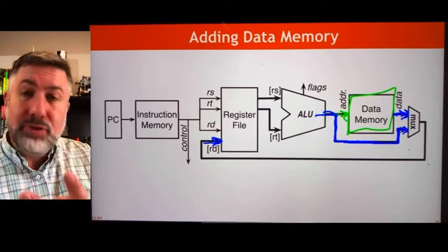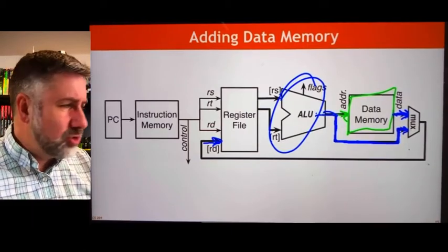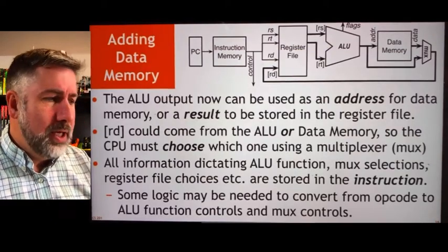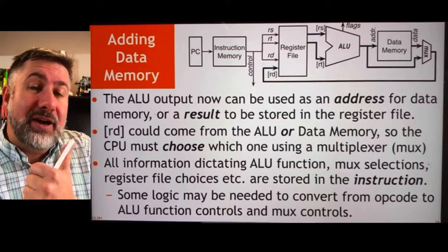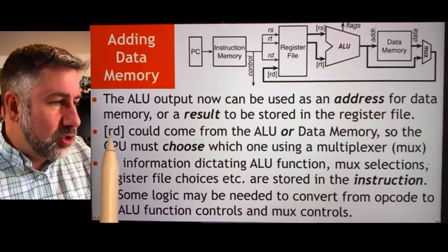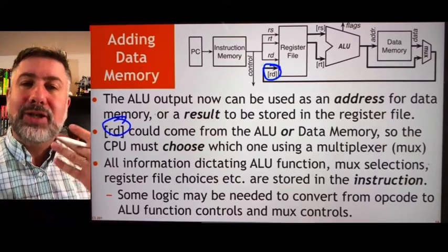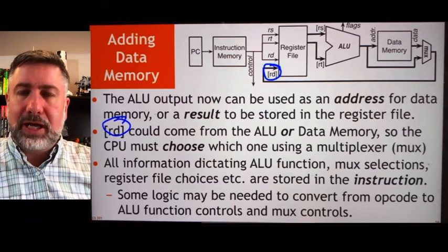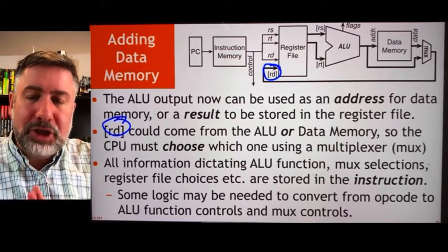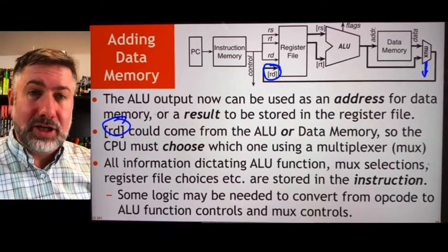So now we have two things the CPU can do: arithmetic and logic operations, and load and store information to and from memory. Currently we can load — we can look up information from memory and bring it into the register file. The ALU is used in one of two ways: calculate a data address or calculate a result to store in the register file. The result RD can now come from either the ALU or the output of data memory, so we need a multiplexer to make that choice. This is a recurring theme in building these complex data paths: we create a bunch of things we could do, then use multiplexers to choose which one we actually do.